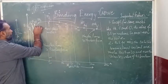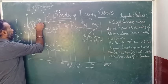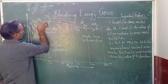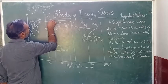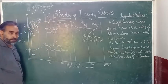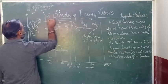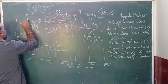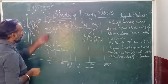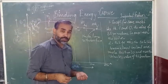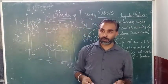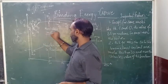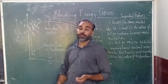Then we see a gradual increase in the binding energy per nucleon, and it goes to a maximum for iron — around 8.7 Mega Electron Volt. Iron is supposed to be the most stable element in the periodic table.